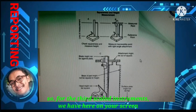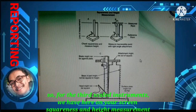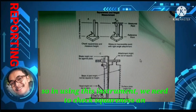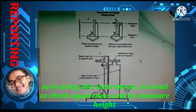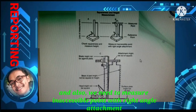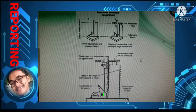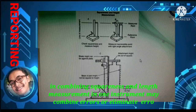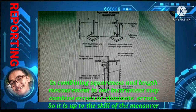For the third scaled instrument, we have squareness and height measurement. When using this instrument, we need to check squareness and measure height, and also measure inaccessible points with a right-angle attachment. Combining squareness and length measurement in one instrument may combine errors or eliminate errors, depending on the skill of the measurer.